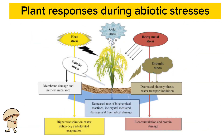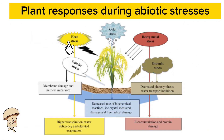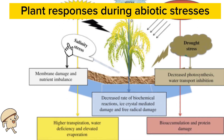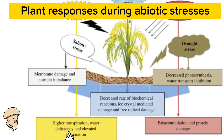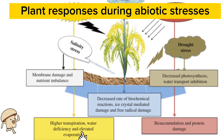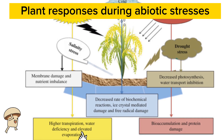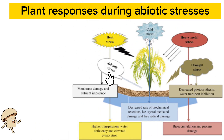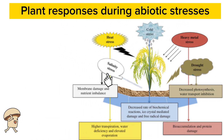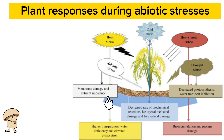Here are some plants' responses during abiotic stresses. During heat stress, plants show higher transpiration, water deficiency, and elevated evaporation. During salinity stress, plants show membrane damage and nutrient imbalance.